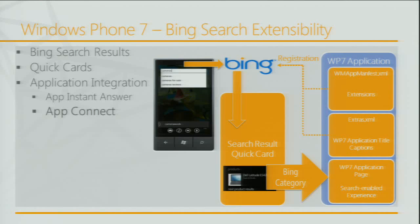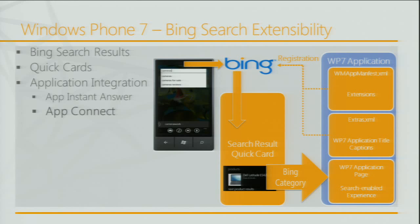You don't have to register with Bing directly — you register with the Bing application on the phone. When you deploy your application, there's a file called WMAppManifest that declares extensions you want to participate in, and you deploy an extras.xml file where you declare which Bing categories your application is associated with. For example, we're associated with cameras and optics, computing, software, video games, and electronics. If furniture or any other unrelated category comes back, our app won't show up in the apps pivot. To debug the Bing integration you can't attach to the emulator normally — instead, you change the start page in the manifest to your Bing search XAML page with a hardcoded category.